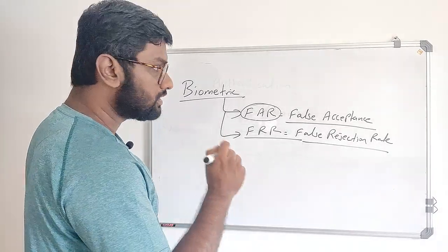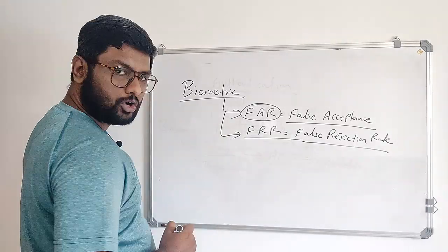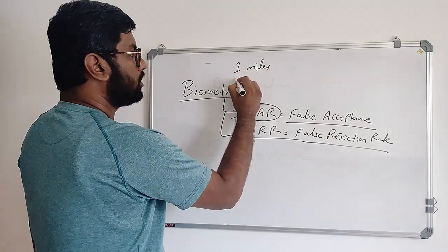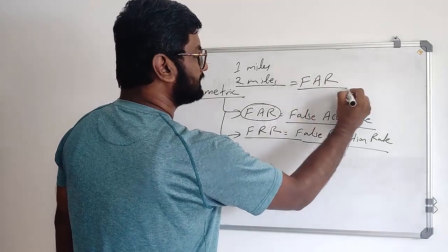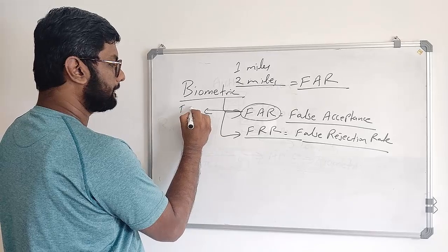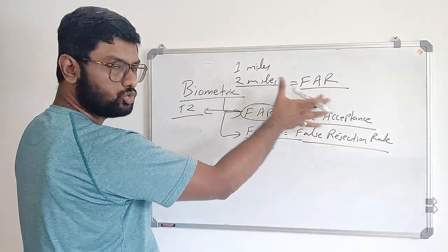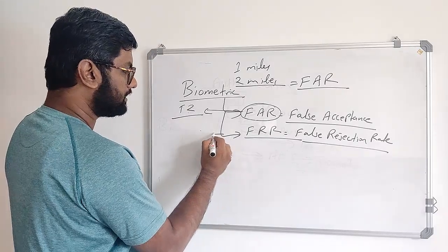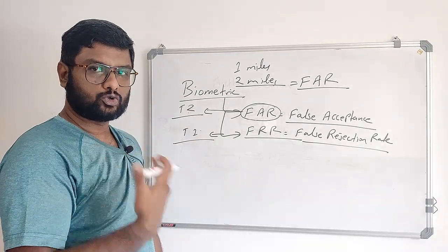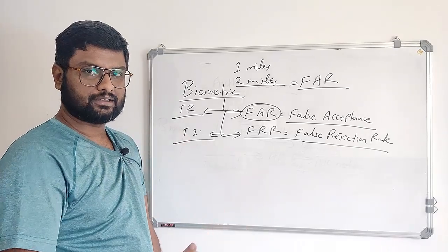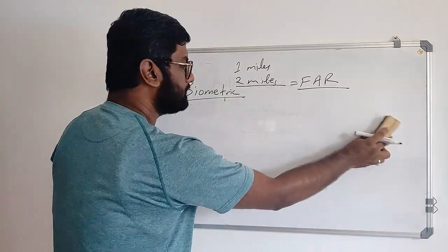Now in the CISSP exam, they don't ask you based on FAR, they ask you based on error rate. So how to remember? If you want to walk one mile or two miles, definitely which one is far? Two miles. So two is far. That is why Type 2 error is FAR, because two miles is far, and FRR is opposite, which is called Type 1. So two miles is far than one mile. So FAR is called Type 2 and FRR is called Type 1.